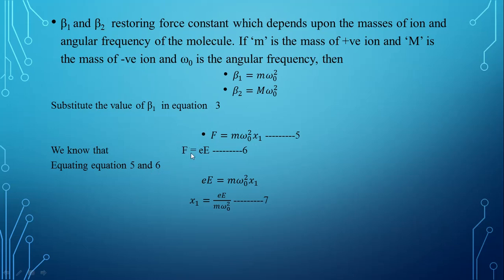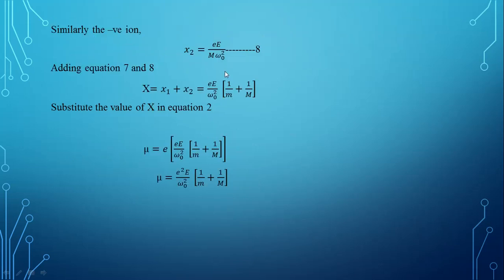We know that force equals charge into applied field. Comparing equations 5 and 6, we get the displacement of the positive ion x1 equal to e times E divided by m omega 0 squared. Name it as equation number 7. Similarly, for the negative ion, replacing small m by capital M, we get the displacement x2. Name it as equation number 8. Adding equations 7 and 8, we get the total displacement X equal to e times E divided by omega 0 squared, multiplied by (1 divided by m plus 1 divided by M).